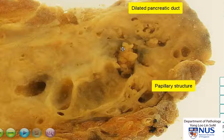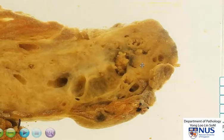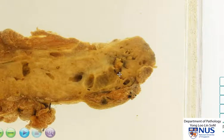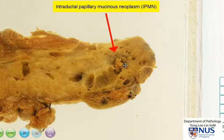This is likely to represent a tumour within the dilated pancreatic duct. One of the commonest tumours that occurs within dilated pancreatic ducts is called the intraductal papillary mucinous neoplasm, or IPMN for short.